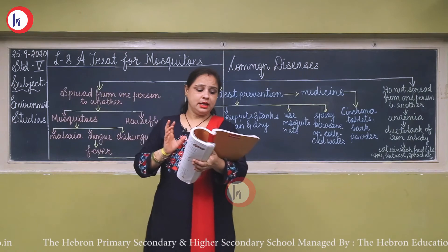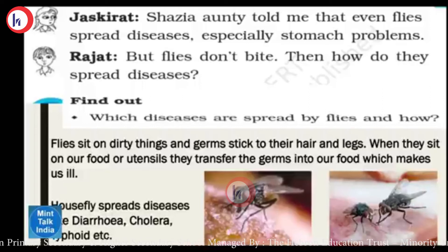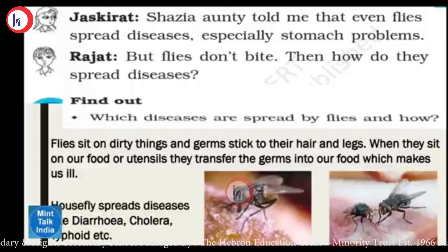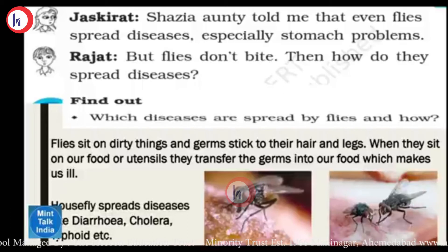An auntie told her that even flies spread disease, especially stomach problems. But flies don't bite, so how do they spread disease? Flies sit on dirty things and germs stick to their hair and legs. When they sit on our food or utensils, they transfer the germs into our food, which makes us ill. Houseflies spread diseases like diarrhea, cholera, and typhoid.